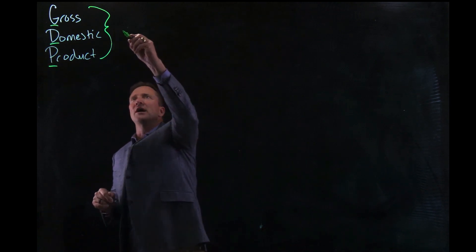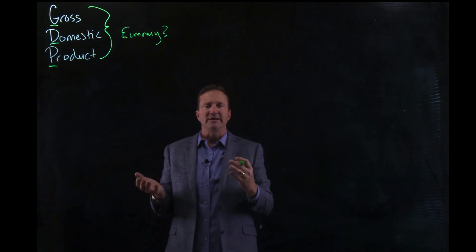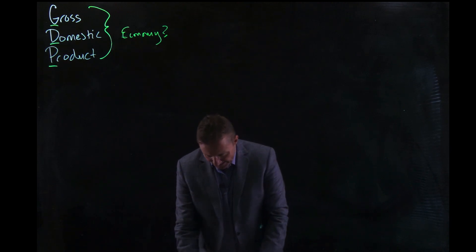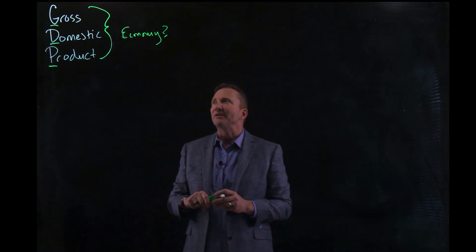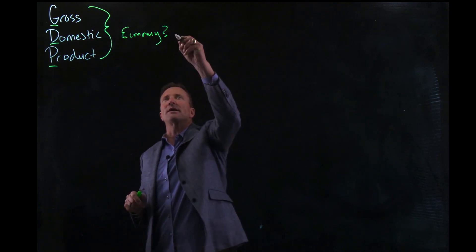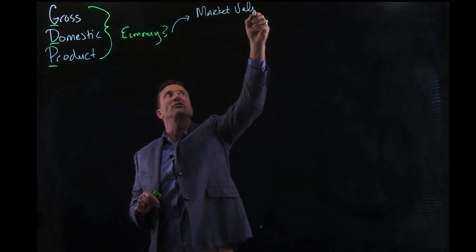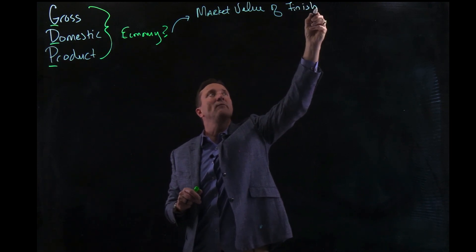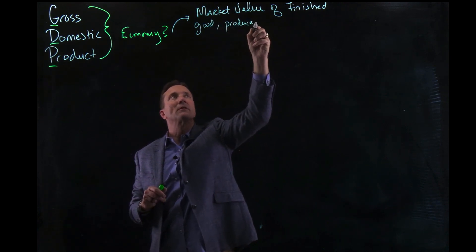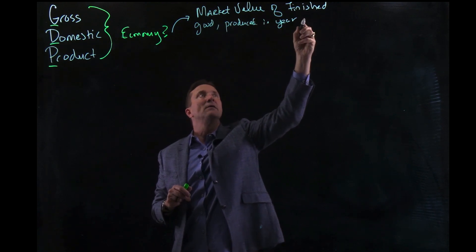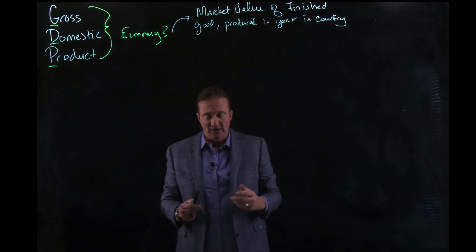GDP is a measure of our economy, and our economy is always a question — how is it doing? So GDP measures that economy, and it is one way that we can see how agriculture contributes. The definition: gross domestic product is a measure of our economy through understanding the market value of finished goods that are produced in a year in any given country.